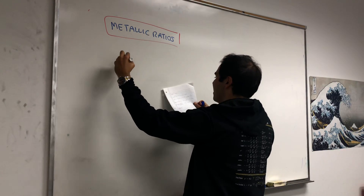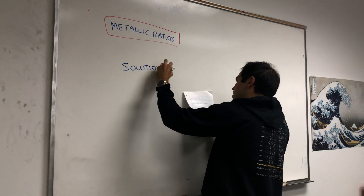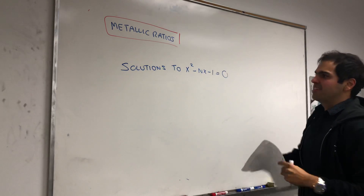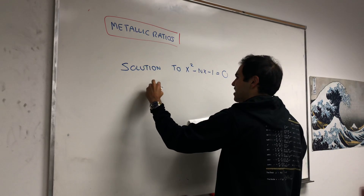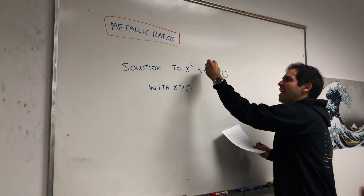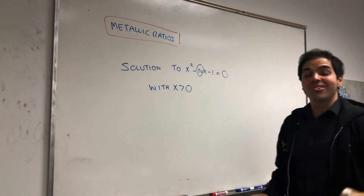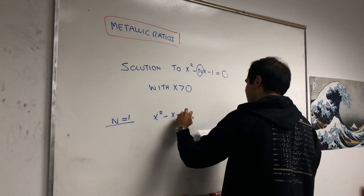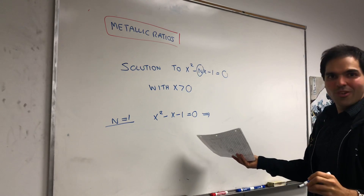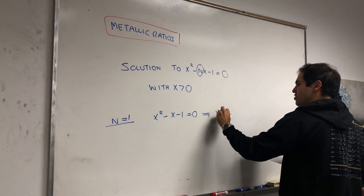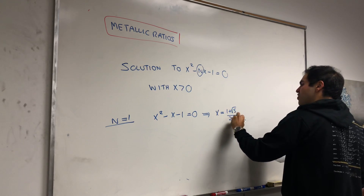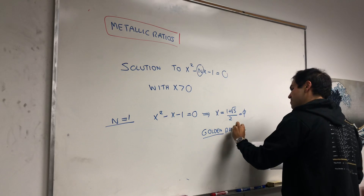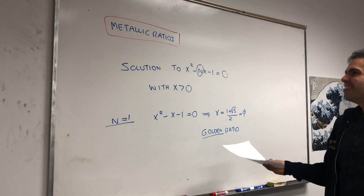What are the metallic ratios or metallic numbers? They are solutions to the equation x squared minus nx minus 1 equals 0, where x is positive. The metallic ratios depend on n — for every n we get a certain ratio. For example, for n equals 1 we get x squared minus x minus 1 equals 0, and applying the quadratic formula gives the only positive solution x equals 1 plus square root of 5 over 2, which is usually called the golden ratio.